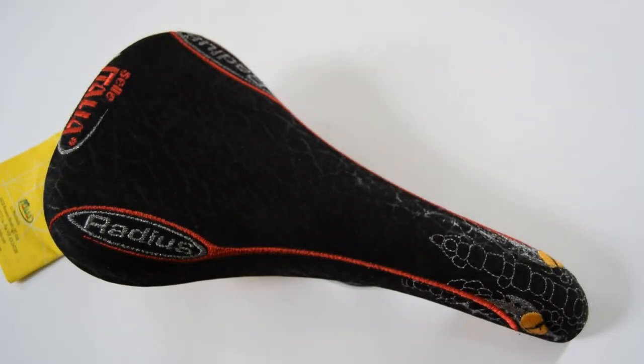Comfort, shape, form, the materials used are just some of the factors that a cyclist will consider when choosing a new saddle. And then you have the Italia Radius.